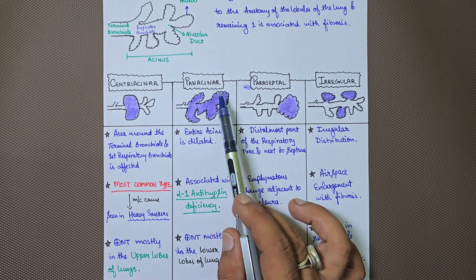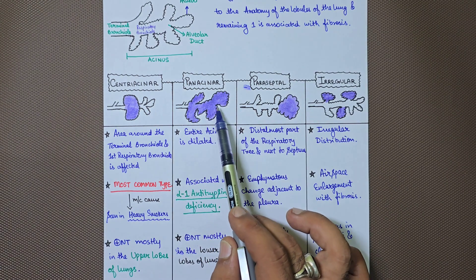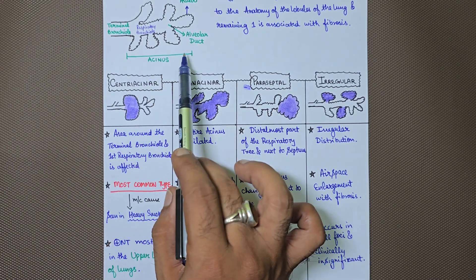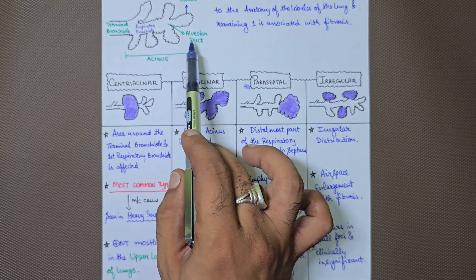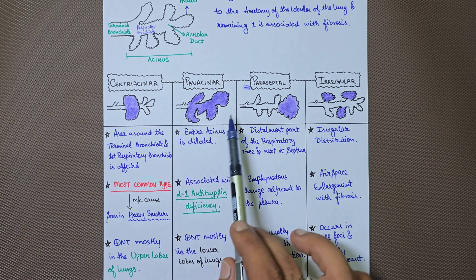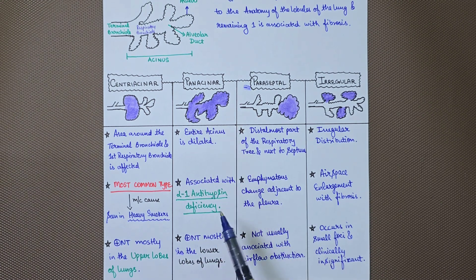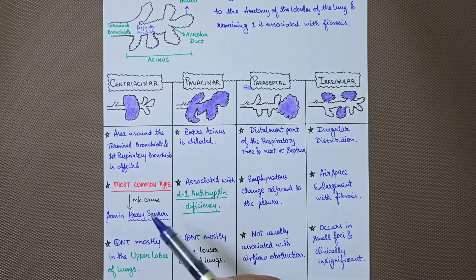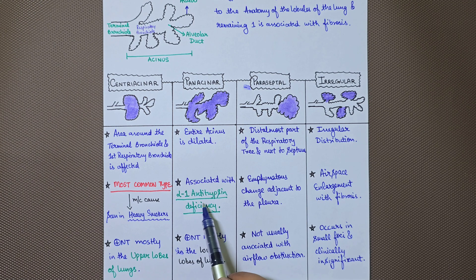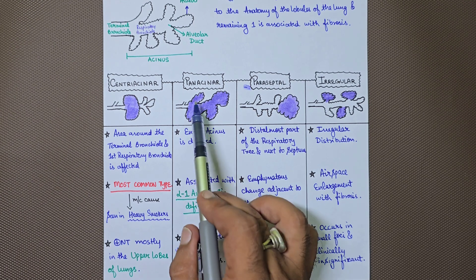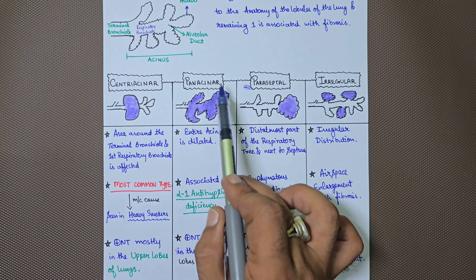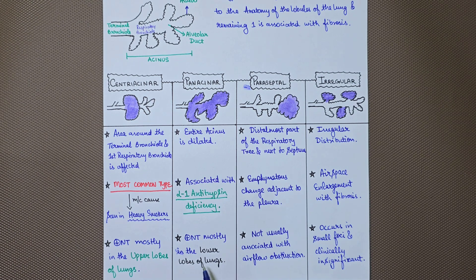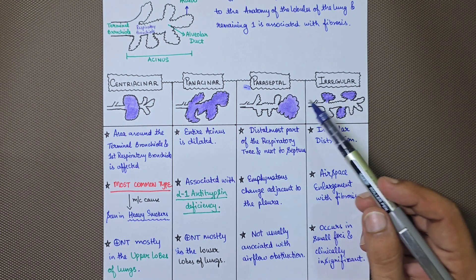The second type is panacinar emphysema. The entire acinus is dilated and affected — from the respiratory bronchiole all the way to the last alveoli. This is usually due to genetic predisposition; if the patient has alpha-1-antitrypsin deficiency, it can lead to panacinar emphysema. It is usually present in the lower lobes of the lungs.